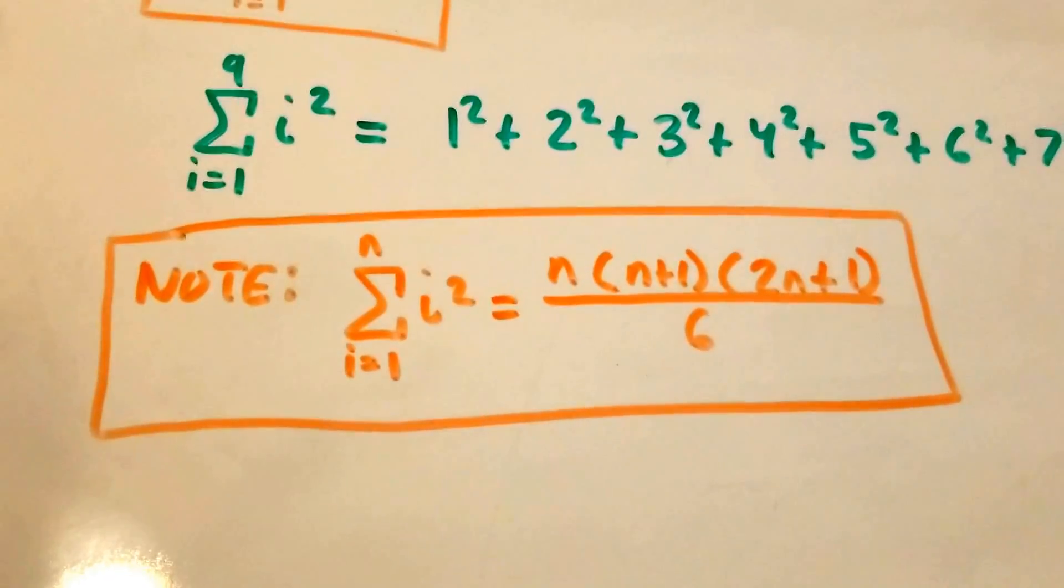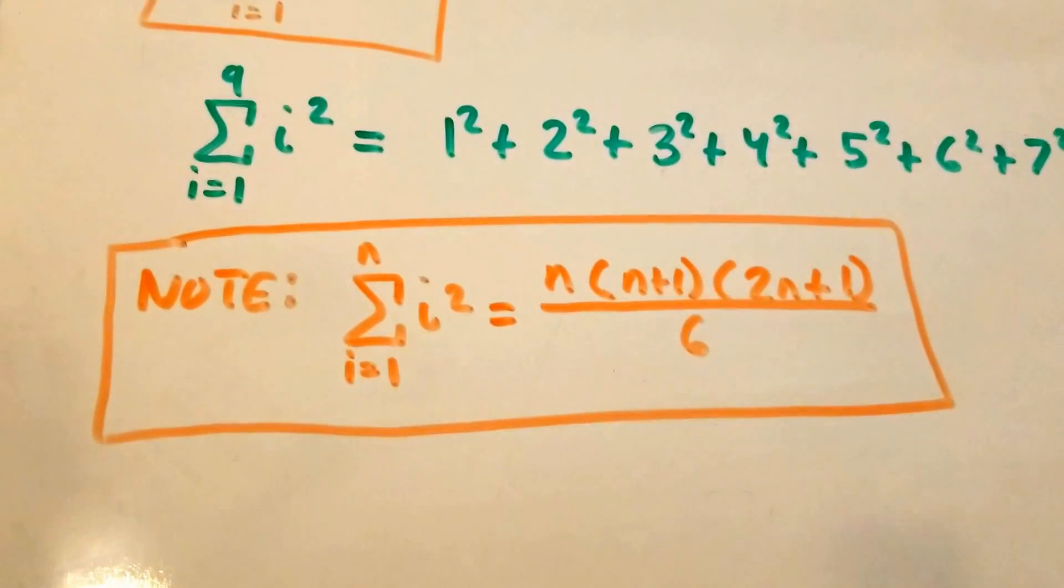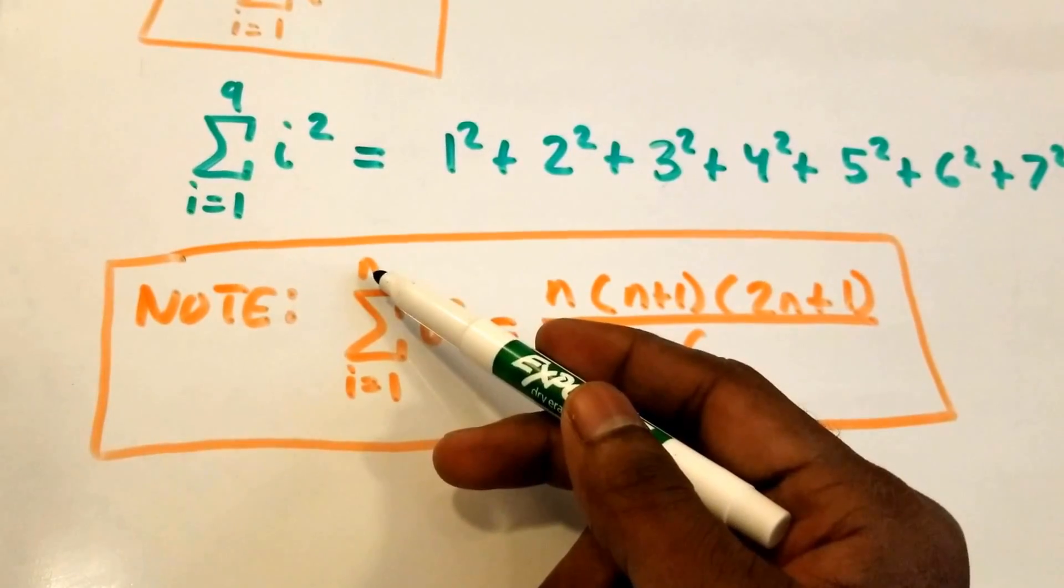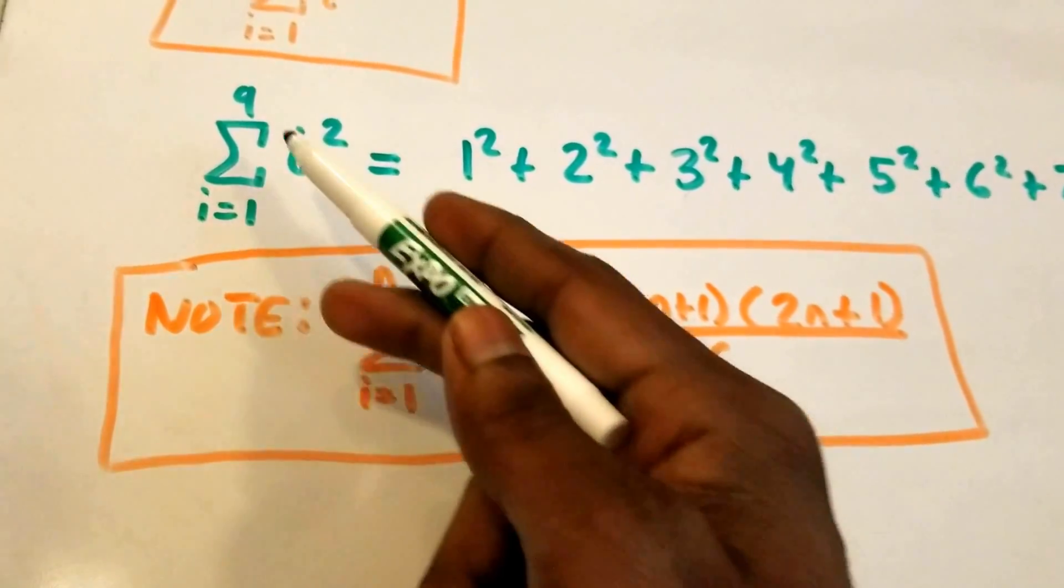And now let's take our summation that we currently have that runs from I equals 1 to 9, and we're going to substitute out n for the value 9.